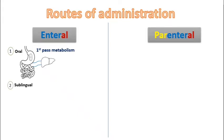The second route is the sublingual route, in which you take a small pill under the tongue. This route bypasses first-pass metabolism, so it has a higher bioavailability than the oral route. An example is nitroglycerin, a drug used to treat angina.